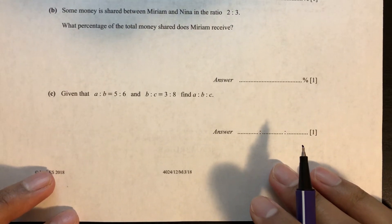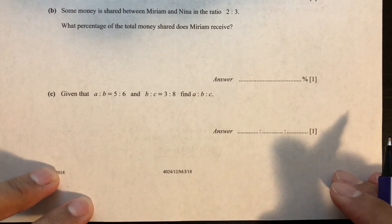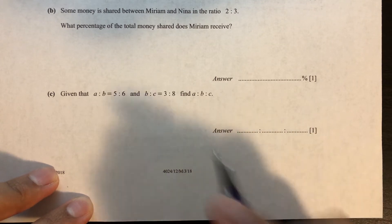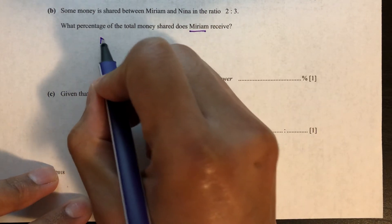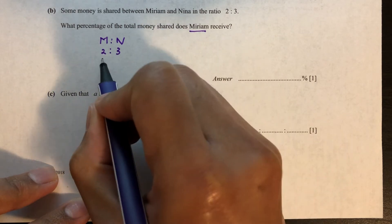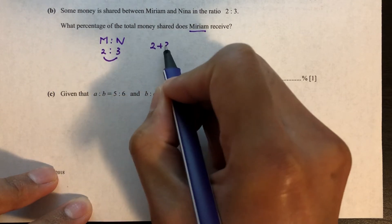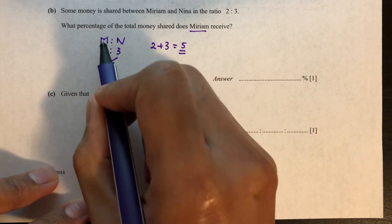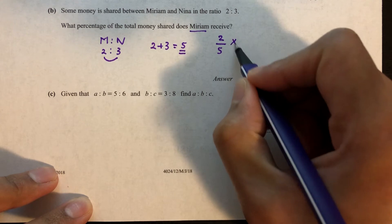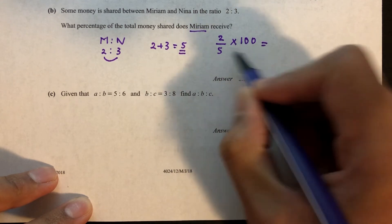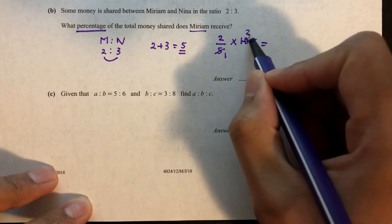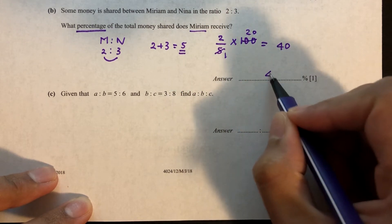Part B: some money is shared between Miriam and Nina in the ratio 2 to 3. What percentage of the total money does Miriam receive? The total number of shares is 2 plus 3 equals 5. Miriam receives 2 shares, so it's 2 over 5 times 100. Divide by 5 gives 20, and 2 times 20 is 40. So 40% is the answer.